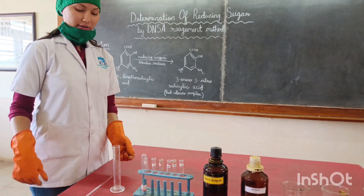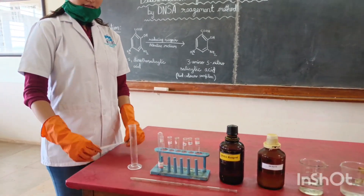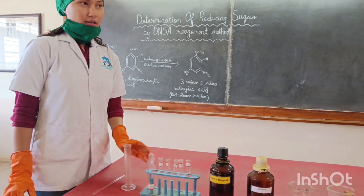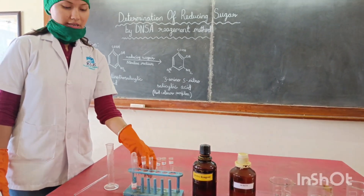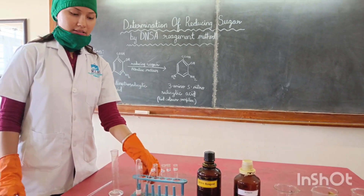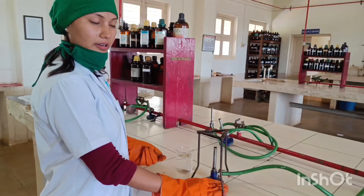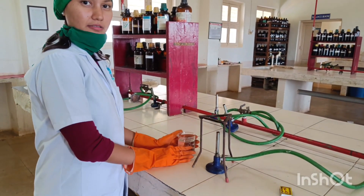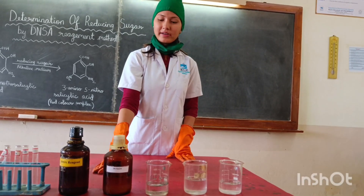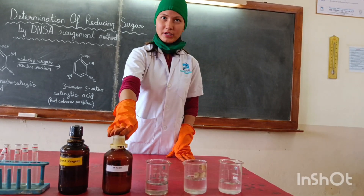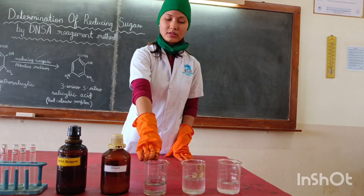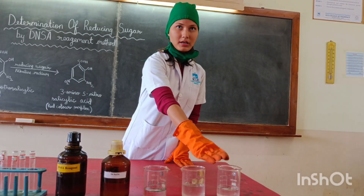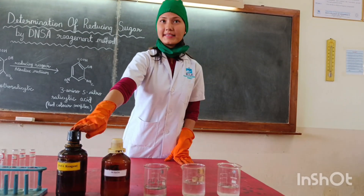The apparatus used for this experiment are glass slot, measuring cylinder, clean and dry test tubes, test tube stand, pipette, burette, burette stand, and beaker. The reagents used for this experiment are NaOH, standard glucose solution, unknown concentration of sample, distilled water, and dNSA reagent.